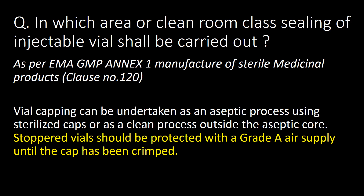In which area or clean room class should sealing of injectable vials be carried out? As per EMA GMP Annex 1, manufacturer of sterile medicinal products, clause number 120: while capping can be undertaken as an aseptic process using sterilized caps, or as a clean process outside the aseptic core, stoppered vials should be protected with a Grade A air supply until the cap has been crimped.